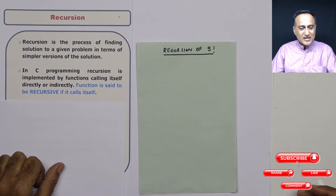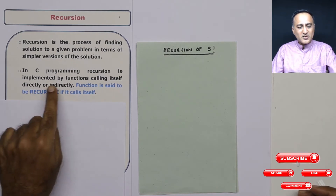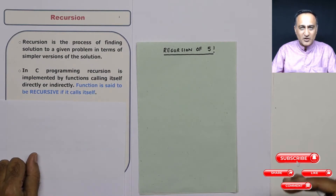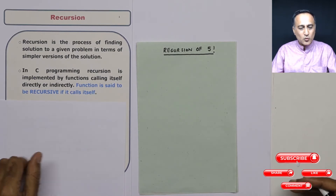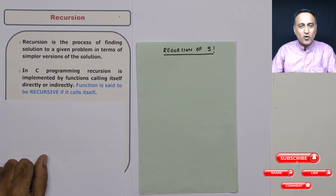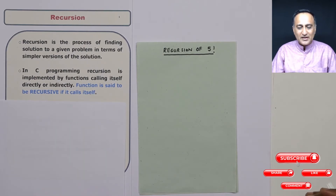In C, if recursion has to be implemented, it is implemented by using functions. What happens is when a function is called directly or indirectly, or a function calls itself multiple times, then that function is said to be recursive.